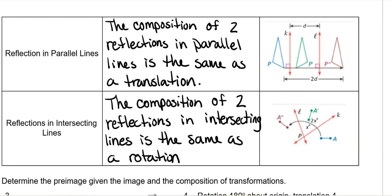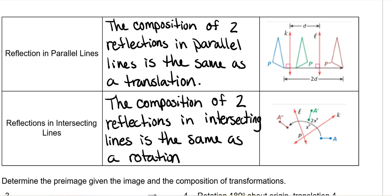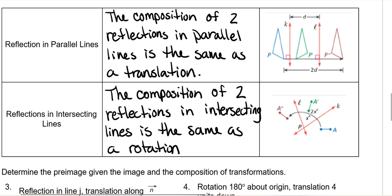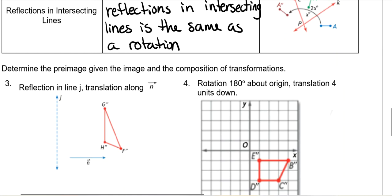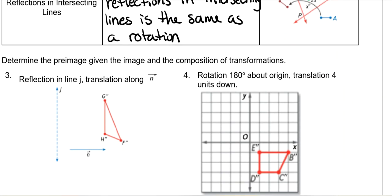Reflections in intersecting lines: the composition of two reflections in intersecting lines is the same as a rotation. When you reflect the first one that's obviously a reflection, but if you ignore the middle step and go from blue to brown, it's a rotation. So reflecting over two intersecting lines results in a rotation between your pre-image and your final image.